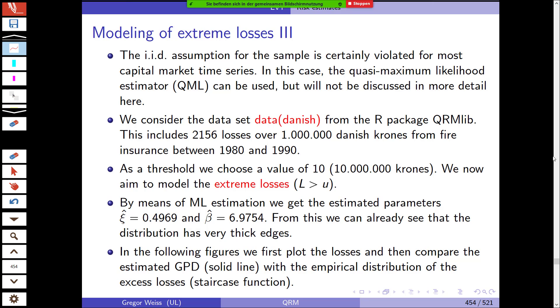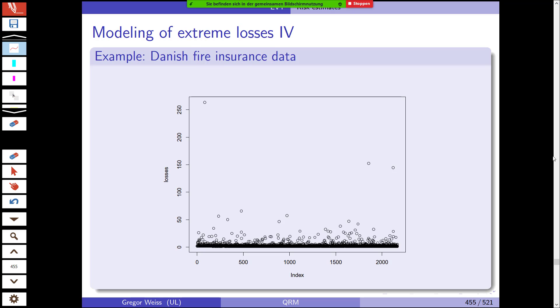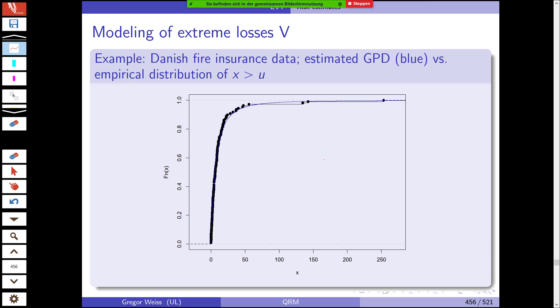By means of maximum likelihood estimation, very simply done in R, we get the estimated parameters xi hat and beta hat. We can already see that the distribution has very thick tails. In the following figures, you see the plotted losses and the estimated GPD, as well as the empirical distribution of the excess losses. As you can see, we have some extremely high losses of 250 million Danish kroner, but most are close to zero.